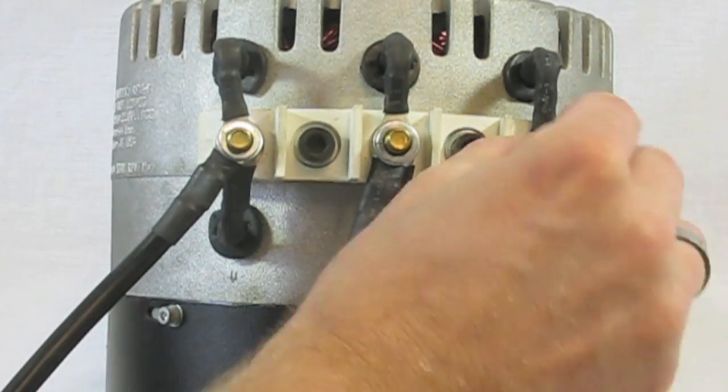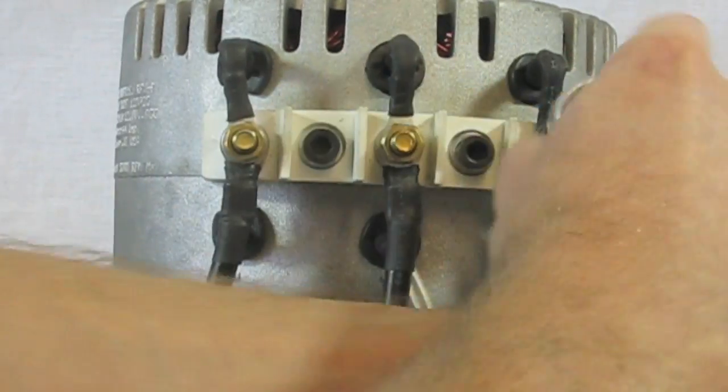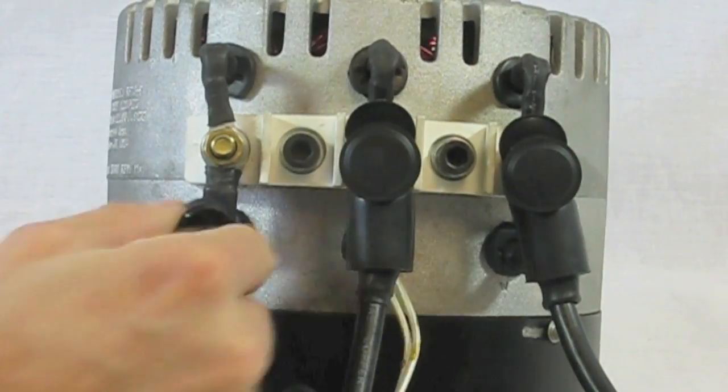When attaching the motor cables you want to first install the cable and then on top of that goes the washer, and then the lock washer, and last is the nut.